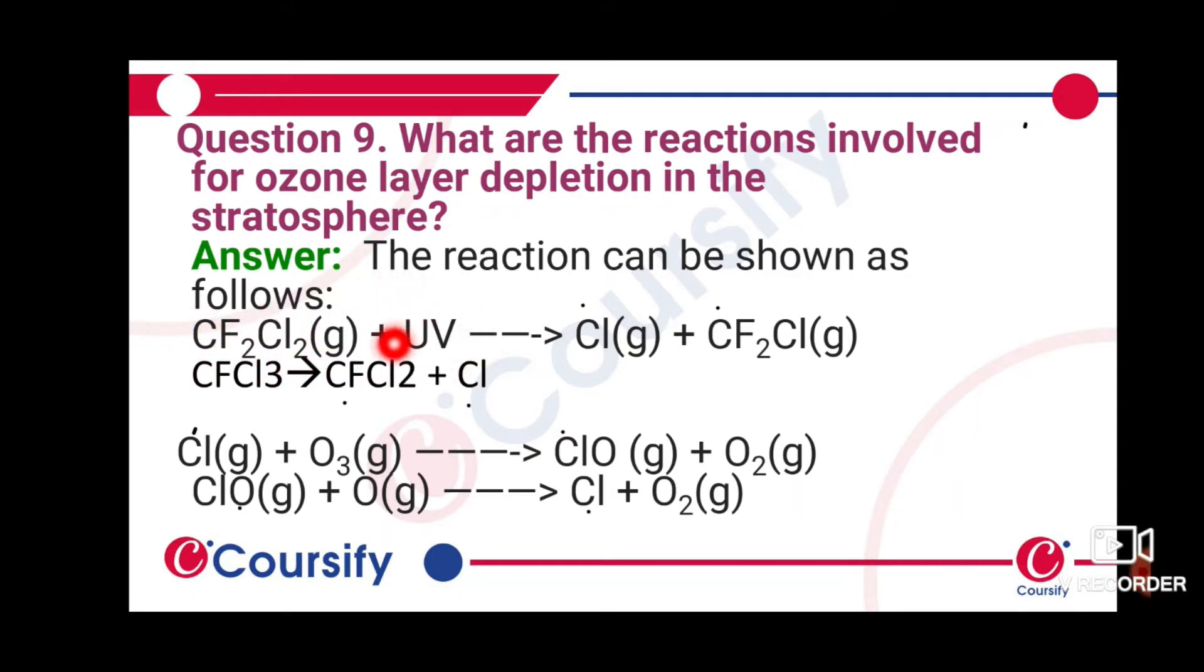Then you can see the light with Cl. And the other is CF₂Cl. This is CFCl₃. It is also in the light.